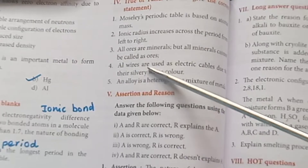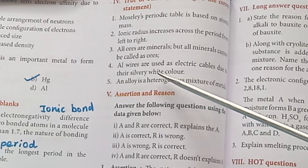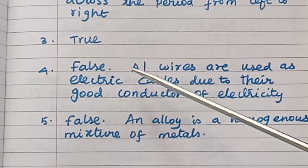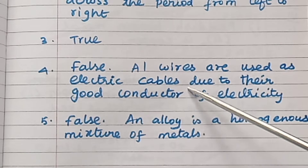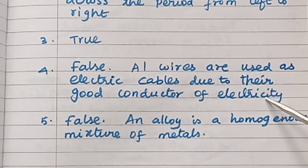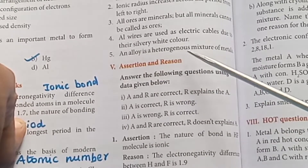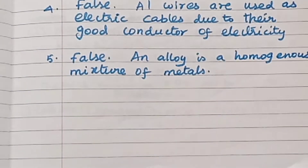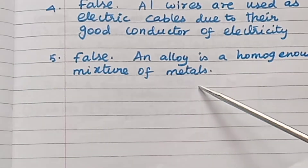Statement 4: Aluminium wires are used as electric cables due to their silvery white color — False. Correct statement: Aluminium wires are used as electric cables due to their good conductivity of electricity. Statement 5: An alloy is a heterogeneous mixture of metals — False. Correct statement: An alloy is a homogeneous mixture of metals.